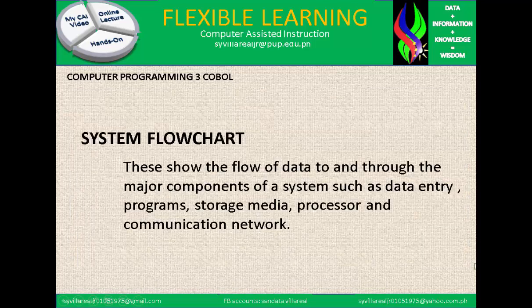System flowchart: this shows the flow of data to and through the major components of a system such as data entry, programs, storage media, processor, and communication network. We are very familiar with the system flowchart because it talks about systems. For example, a computer system includes the keyboard, the mouse, the processor, the motherboard, the video, audio, and cameras — those are parts of the system.